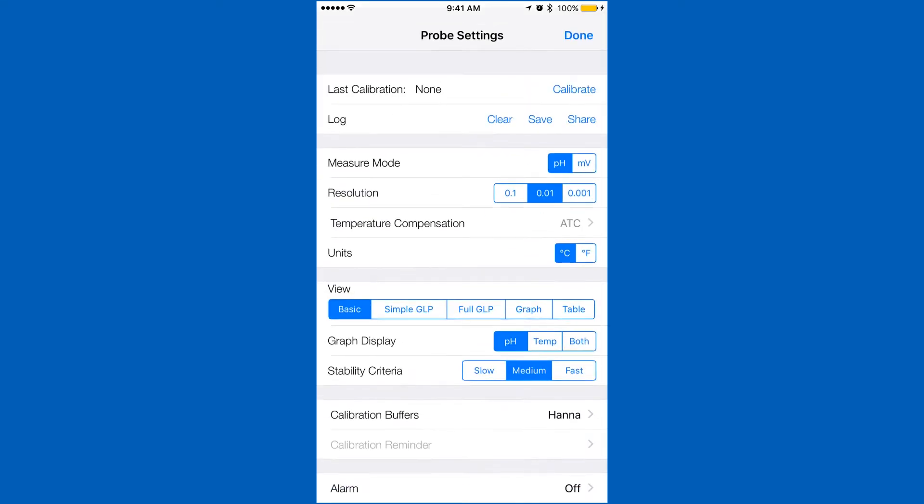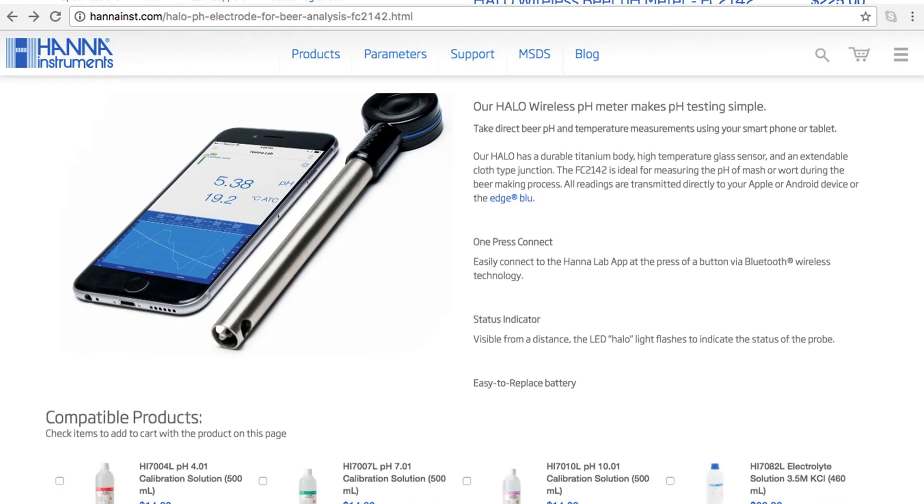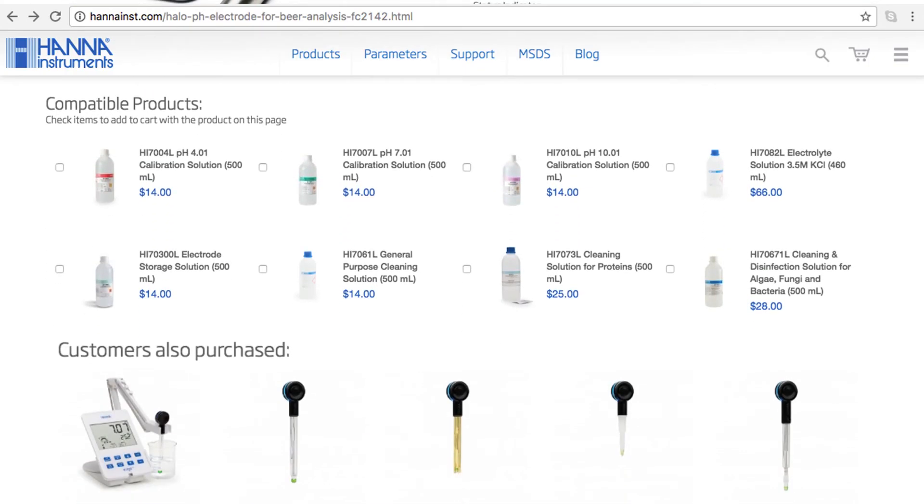To calibrate your Halo pH meter, go into the settings menu. Tap calibrate and you will be taken to the calibration screen. Your Halo can calibrate up to 5 points that are automatically recognized. You can find all the calibration solutions you need right on the product page.